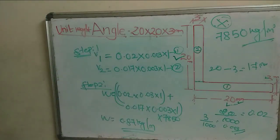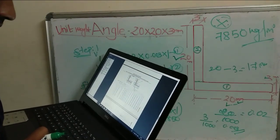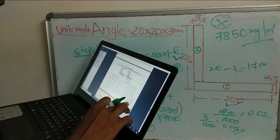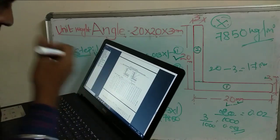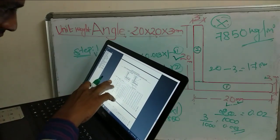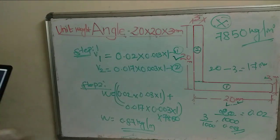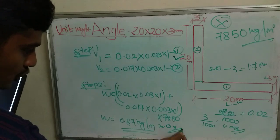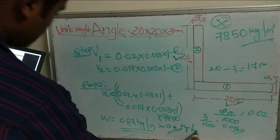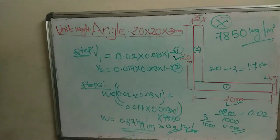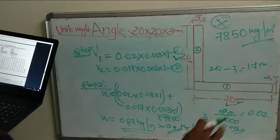Now if we look at the code book — IS 808 — Table 5.1, the code book value is 0.9 kg per meter. So we compared the formula result without the code book to the formula using the code book.